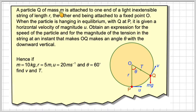A particle Q of mass M is attached to one end of a light, inextensible string of length R, so this radius here is R, the other end being attached to the point O, which is the centre of the circle.